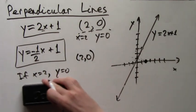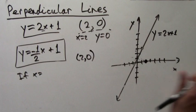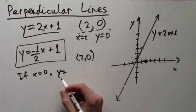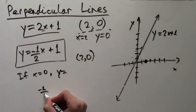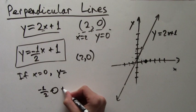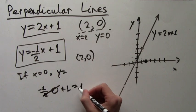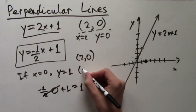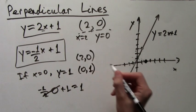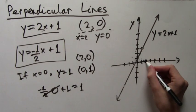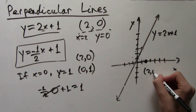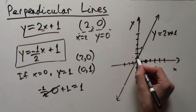For the second point, we can just plug in x equals 0. This gives us y equals just 1, which we also know because 1 is the y-intercept of our function. So now we have two points. One of them is already drawn, and 0, 1 is just 1 above the origin.